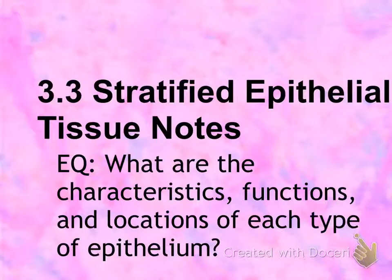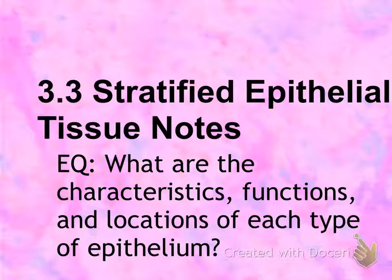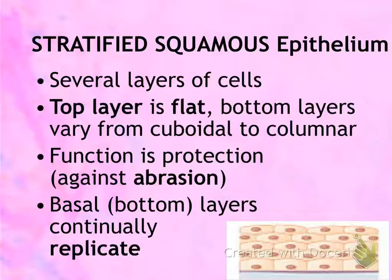This is 3.3 stratified epithelial tissue notes. The essential question is: what are the characteristics, functions, and locations of each type of epithelium? Recall that all stratified epithelium have multiple layers, and let's review some portions of the epithelium.